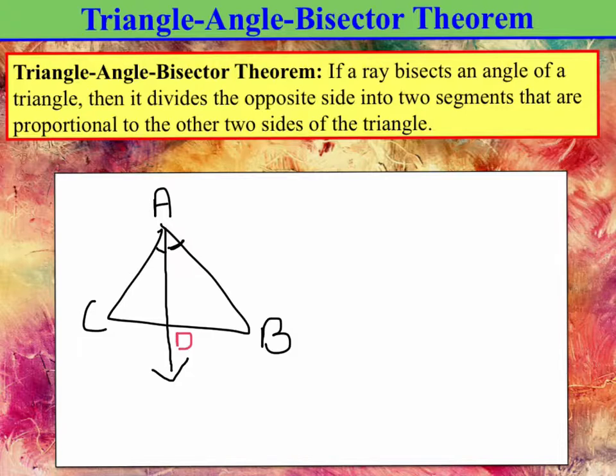Then it divides the opposite side into two segments that are proportional to the other two sides of the triangle. So which sides are we talking about?